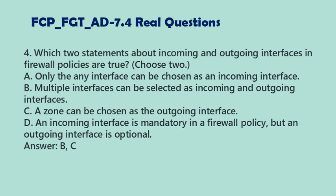Question 4: Which two statements about incoming and outgoing interfaces in Firewall Policies are true? Choose 2. A. Only the Any Interface can be chosen as an incoming interface. B. Multiple Interfaces can be selected as incoming and outgoing interfaces. C. A Zone can be chosen as the outgoing interface. D. An incoming interface is mandatory in a Firewall Policy, but an outgoing interface is optional. Answer: B and C.